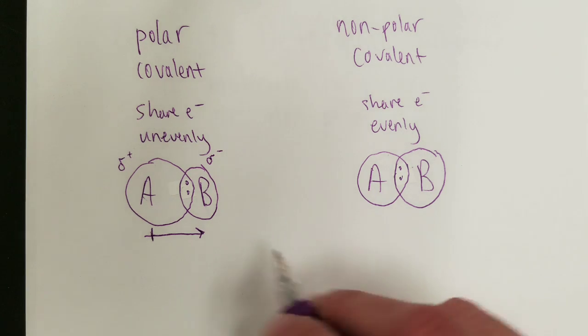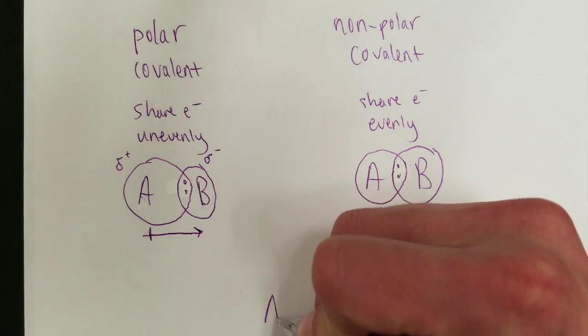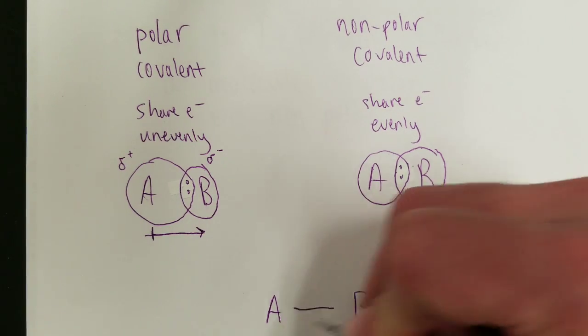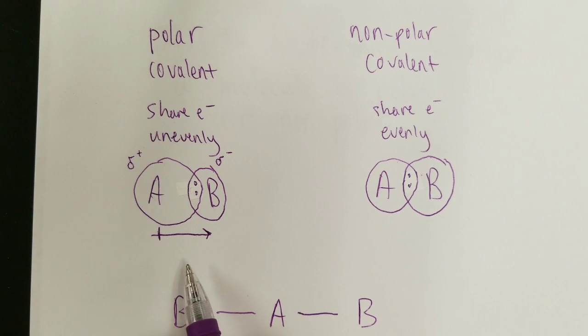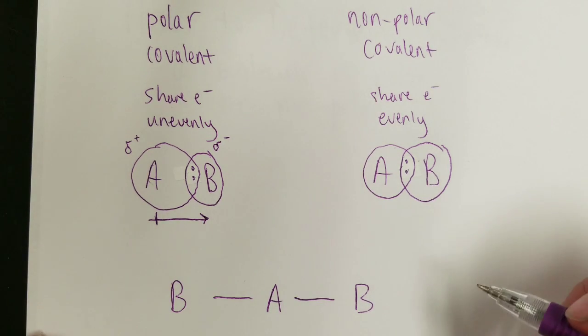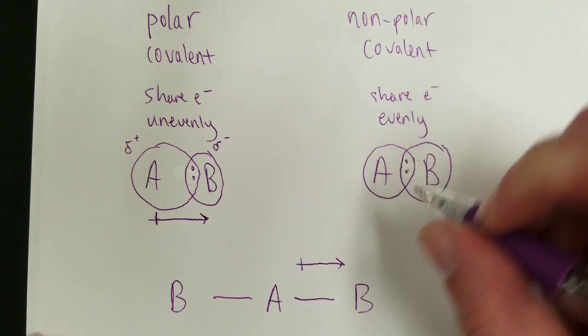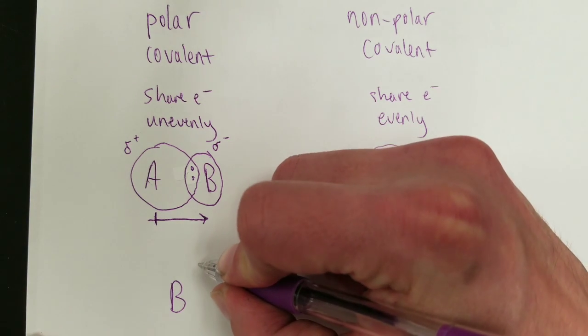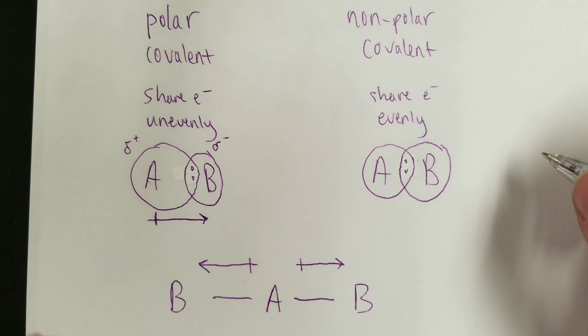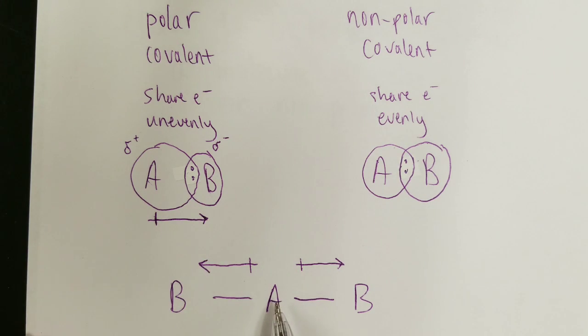Now consider this. What if instead of just A and B, what if you had A bound to two atom Bs? In this situation, the electrons are being pulled this way by one atom B, but is not the other atom pulling those same electrons in the opposite direction? What's it going to do?